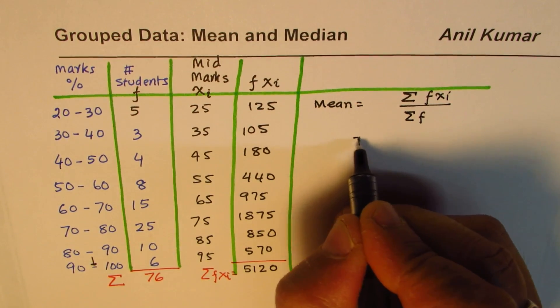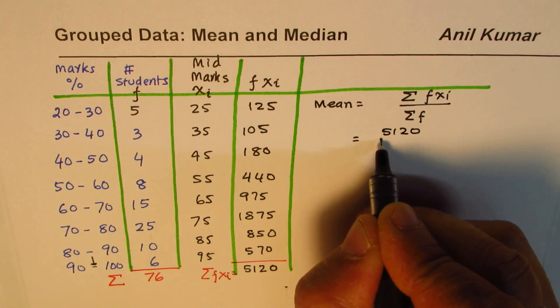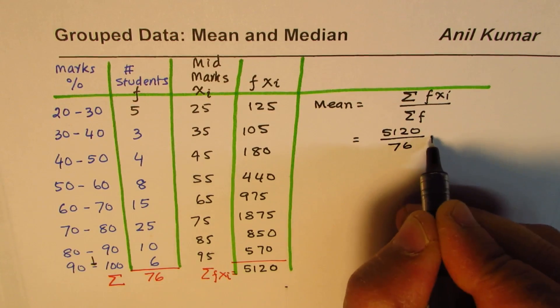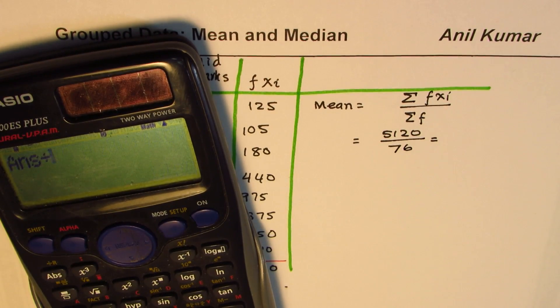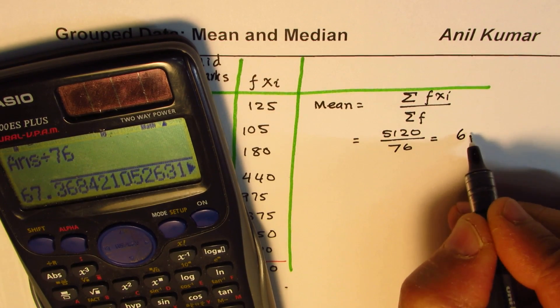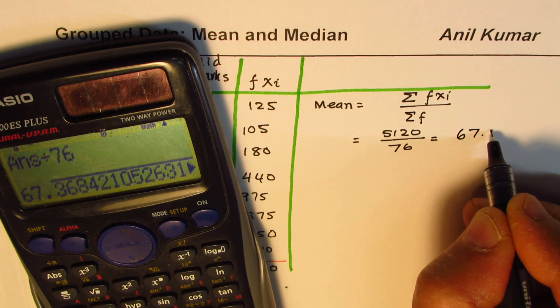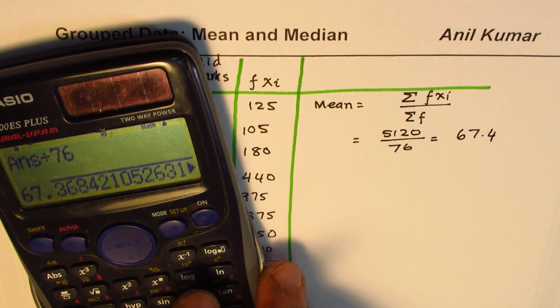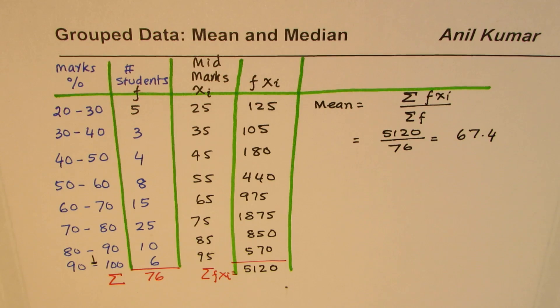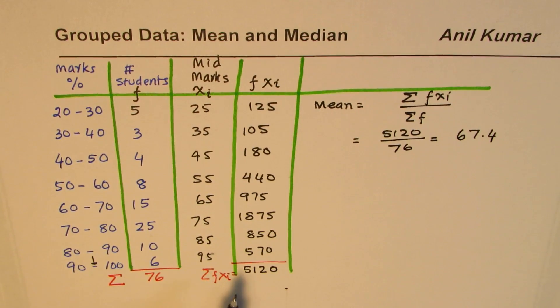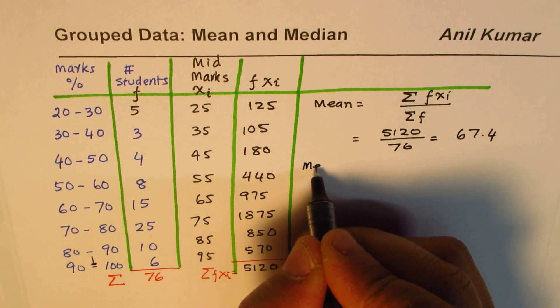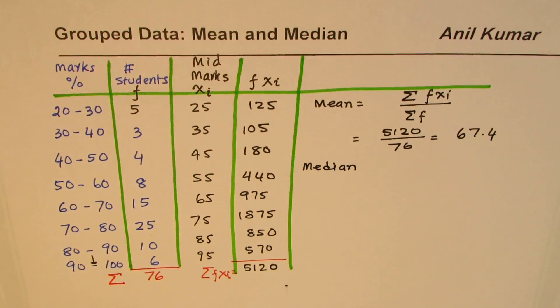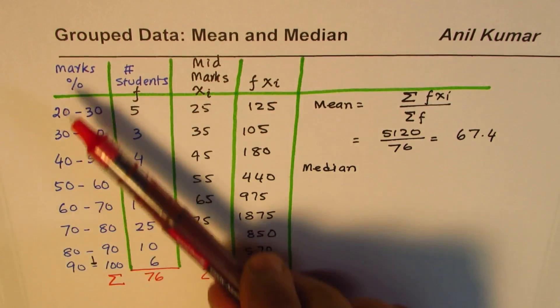Here the mean will be 5120 divided by 76. We have 5120 divided by 76 to get the answer in decimals as 67.4 percent. That becomes the average or the mean marks for all this group of students.